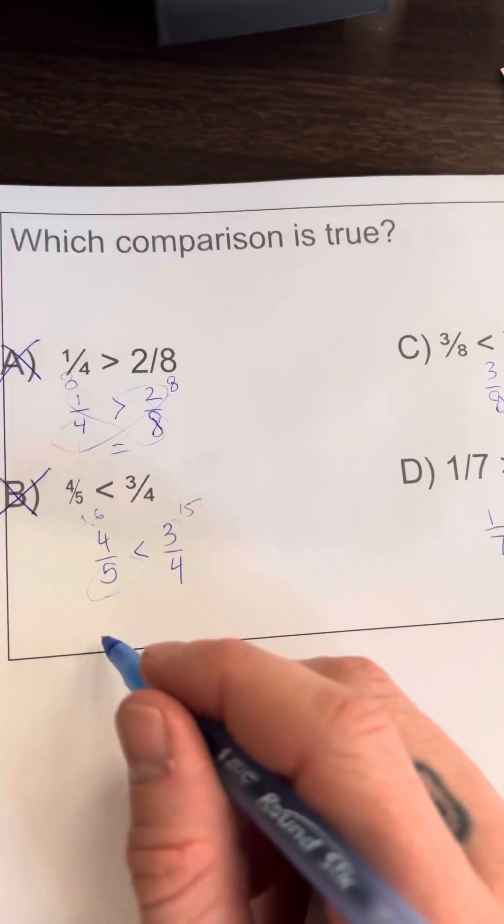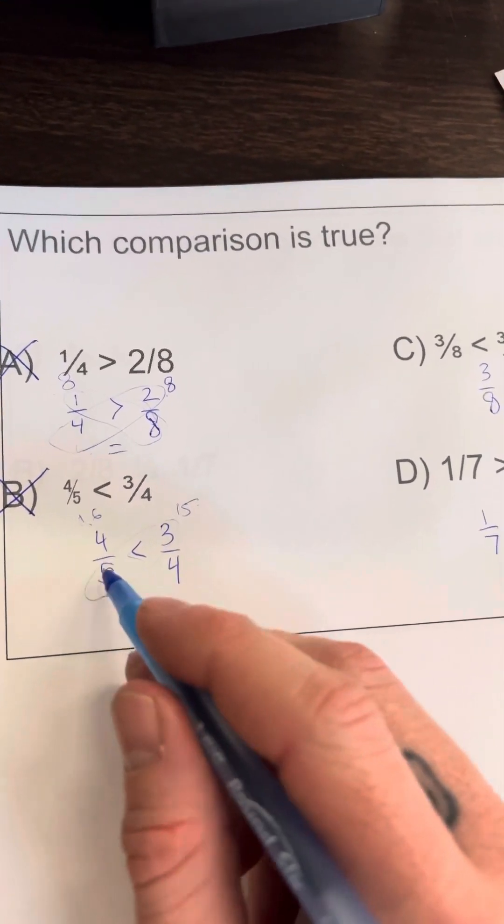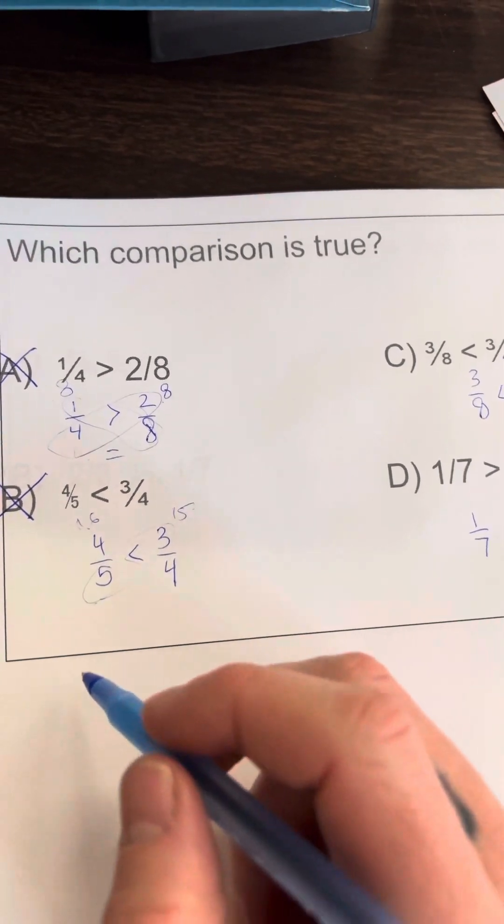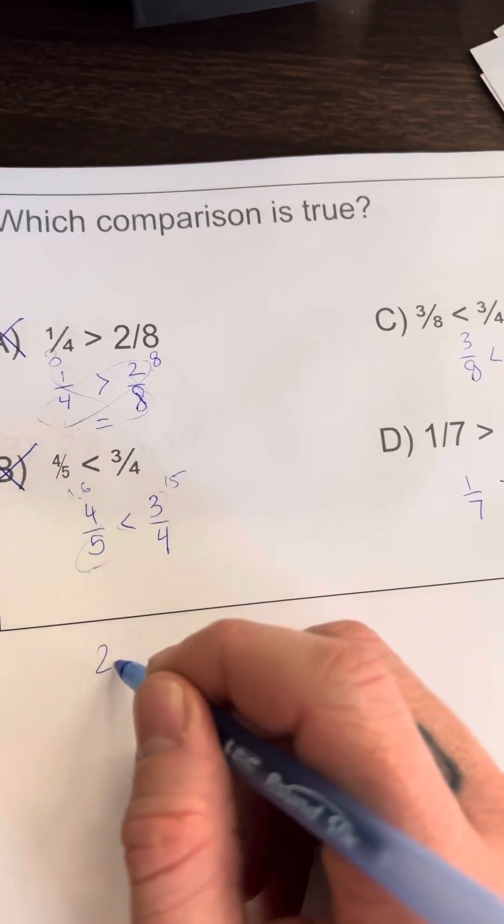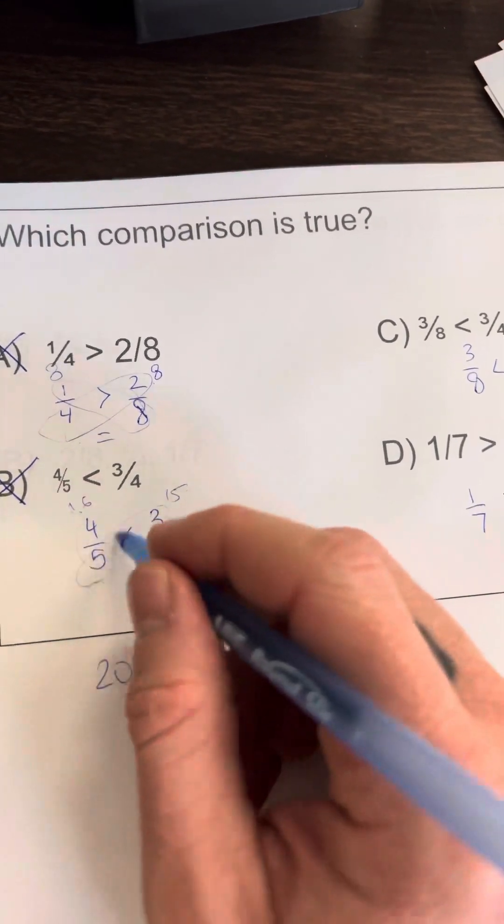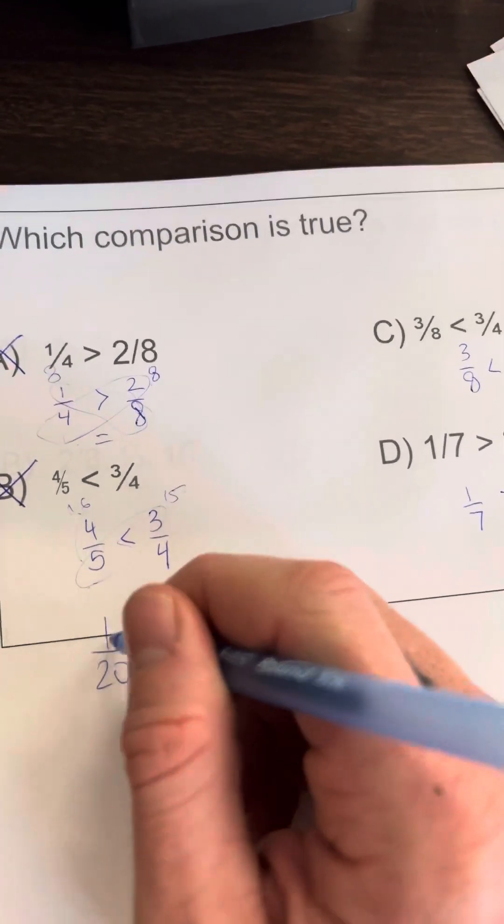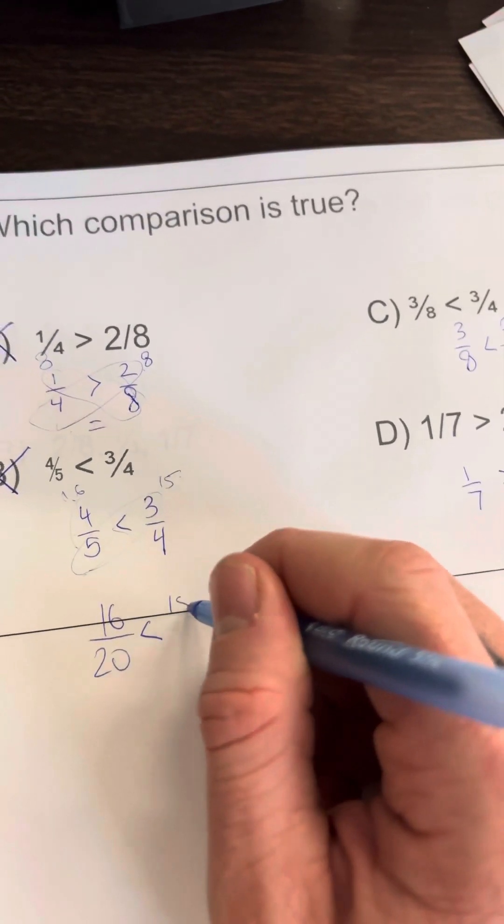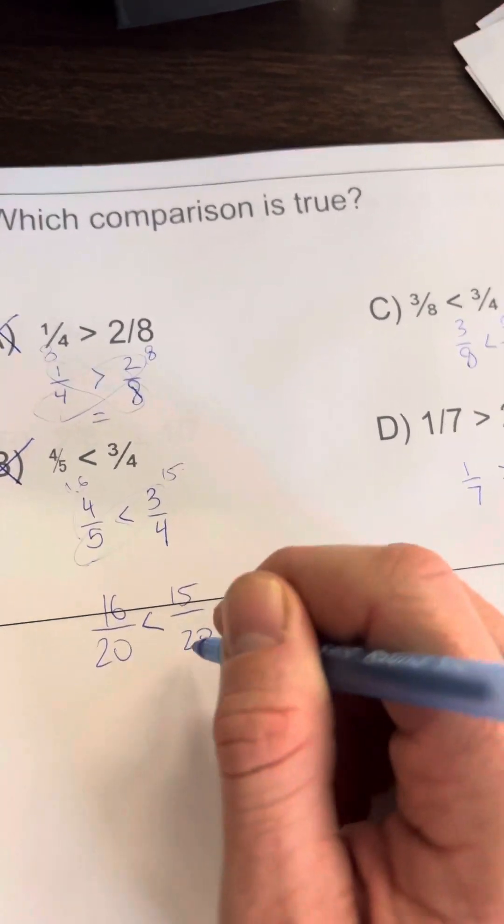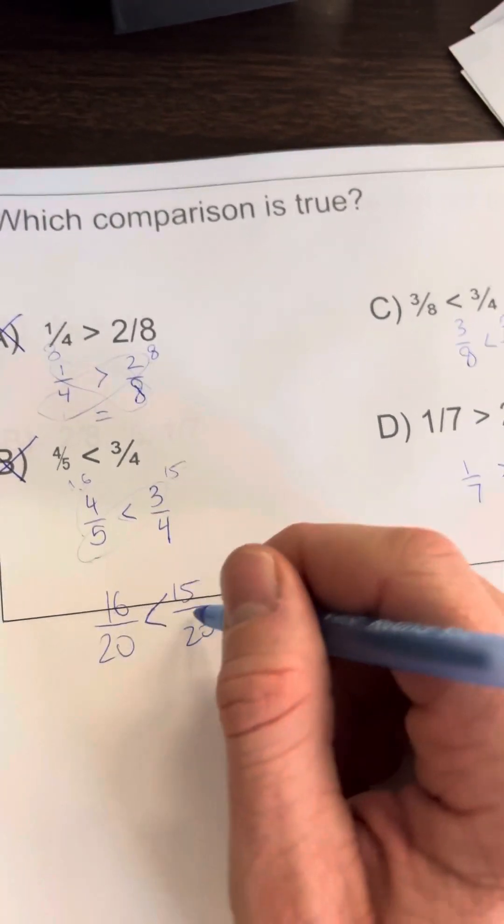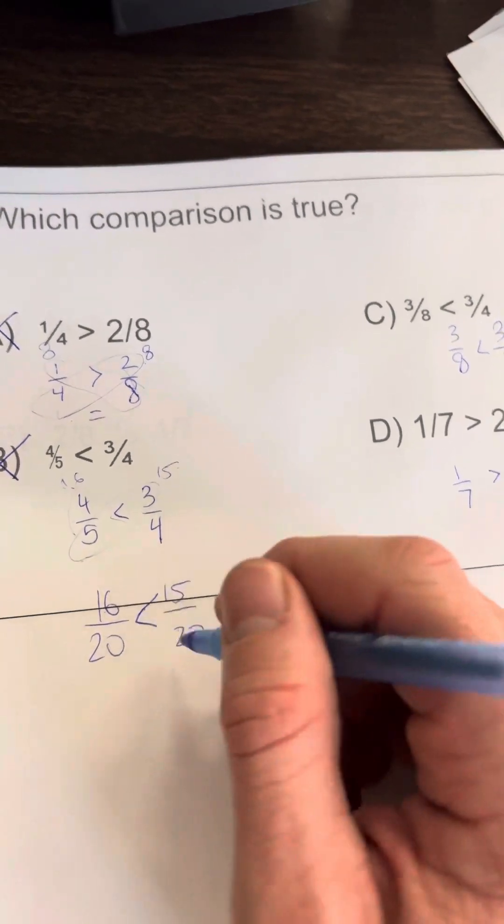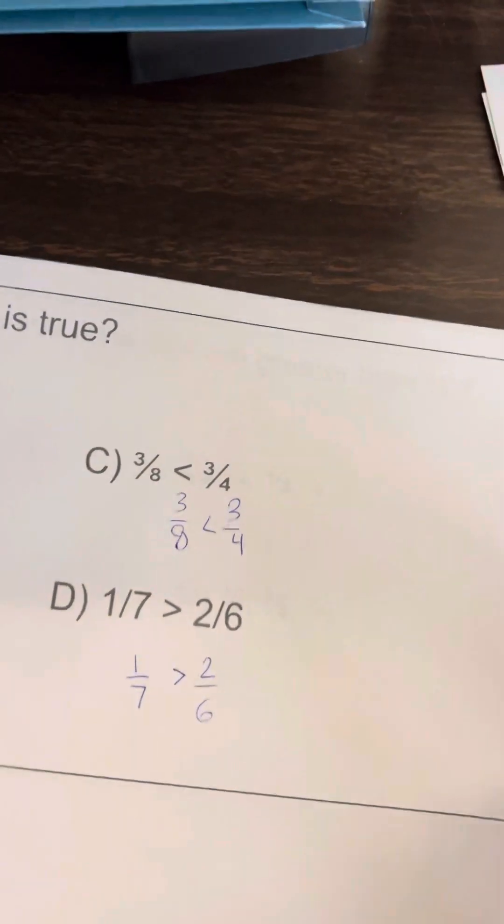I could also turn these into a fraction with 20 as a denominator because I know that's a multiple of both. So this would have been times four-fourths, so I would get 16/20ths is less than 15/20ths. That's not true—16 is greater than 15. So, like I said, not true.